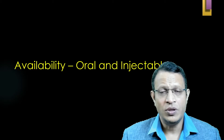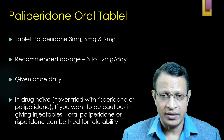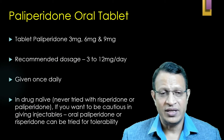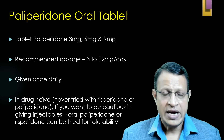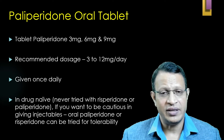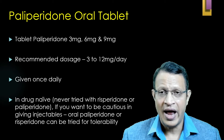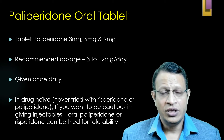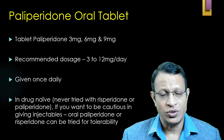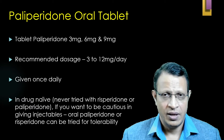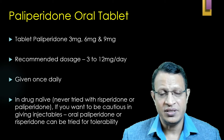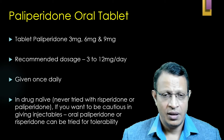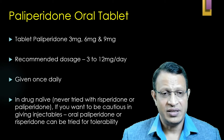Now let's understand how paliperidone is available in the market. It is available both as oral and IM injections. Tablet paliperidone is available as 3 mg, 6 mg, and 9 mg tablets. The usual dosage is between 6 to 9 mg. In some patients who are maintaining well on low dosage, 3 mg is enough. It is given once daily.